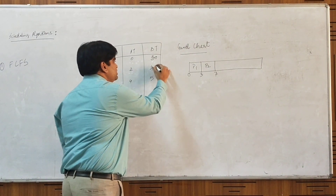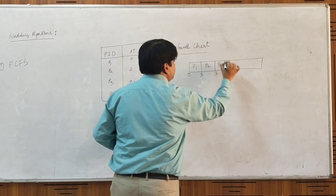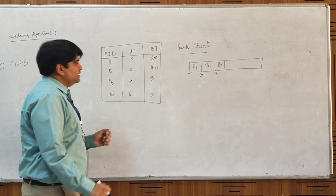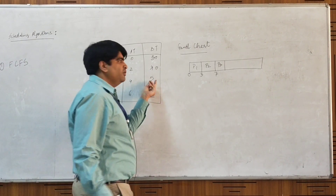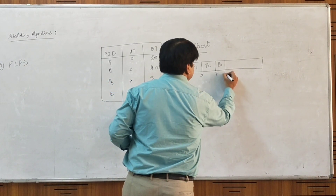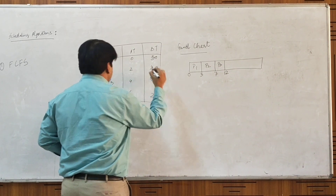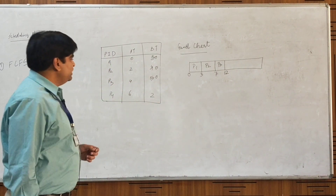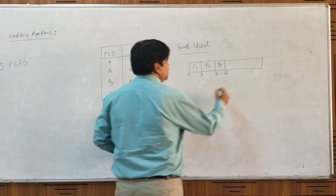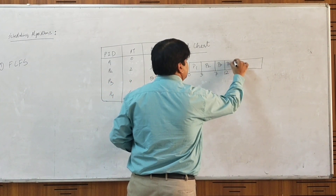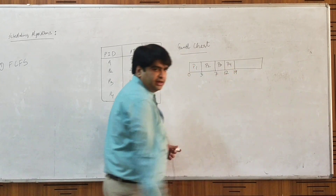The next request is by process P3, and it will receive the processor at t=7. Its burst time is 5, so from 7 to 12, we have allocated the CPU to process P3. Similarly, for process P4, we allocate it from time t=12 till time t=14.